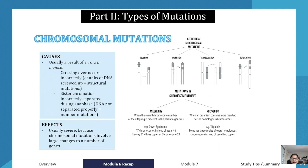Chromosomal mutations usually occur as a result of errors that happen during meiosis and crossing over. This could be because crossing over occurs incorrectly, causing chunks of DNA to be disrupted, leading to structural mutations. We can also see sister chromatids being incorrectly separated during anaphase, where chromosomes may not separate properly, causing further mutations.